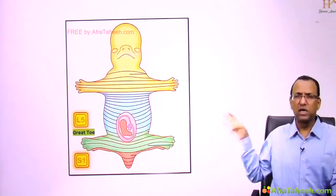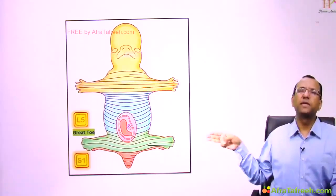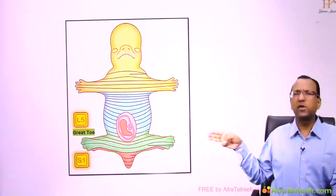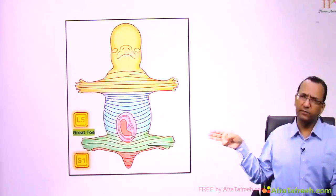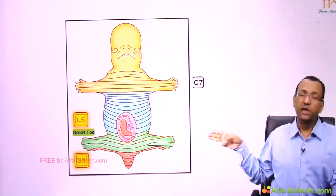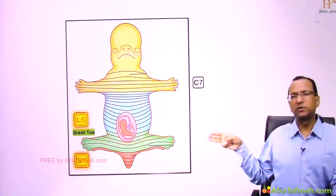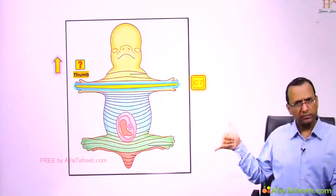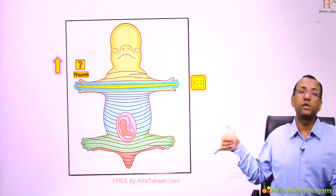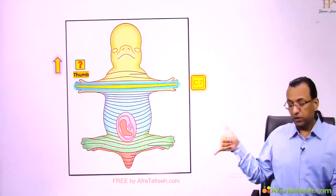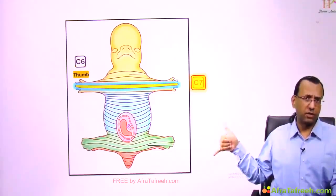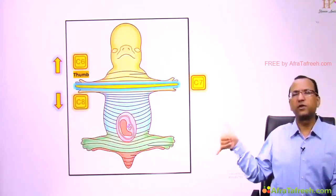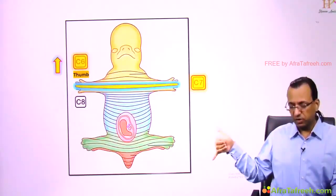What about the middle three fingers in the upper limb? The middle three fingers are C7 dermatome, as discussed in the back region. The thumb is proximal, so it must be C6. And the little finger, being distal, must be C8. Remember this.